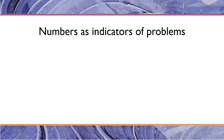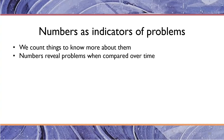A particular indicator of problems is numbers. Numbers are important because we count things to know more about them, and numbers reveal problems when compared over time. When something is bigger or smaller than it was before — depending on what you want to see — it can raise big concern, such as infant mortality rates. If infant mortality rates are going up, we might say this is really bad and investigate prenatal health. We also use numbers to compare with other jurisdictions — we might see that the infant mortality rate is higher in one city or state than another.